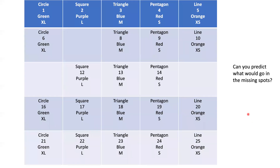In class, I had you do an activity where you're given a series of different note cards that contain specific pieces of information. The information includes things like a shape, a number, a color, and a size. I asked you to create some sort of system for how we could organize those different pieces of information. Ultimately, we would wind up with something like this.